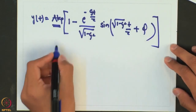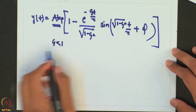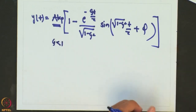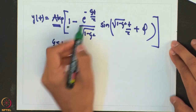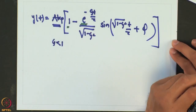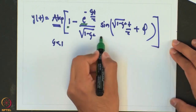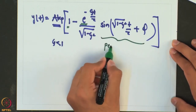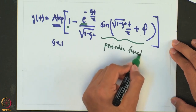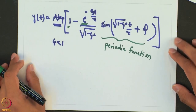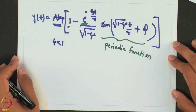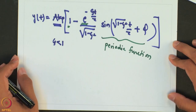We can further simplify by taking root(1 minus zeta squared) out and defining an angle phi such that sin(phi) equals root(1 minus zeta squared) and cos(phi) equals zeta, with phi equals tan inverse of root(1 minus zeta squared) over zeta. This gives the final response: y(t) equals AKP times (1 minus e to the minus zeta t over tau over root(1 minus zeta squared) times sin(root(1 minus zeta squared) times t over tau plus phi)). The response contains an ultimate value AKP, a decaying exponential, and a sinusoid — meaning this system oscillates.